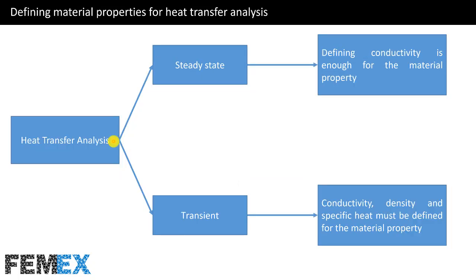Now I want to talk about defining material properties for heat transfer analysis. There are two types of heat transfer analysis in Abaqus: steady-state and transient. For steady-state heat transfer analysis, defining conductivity is enough. For transient heat transfer analysis, conductivity, density, and specific heat must all be defined for the material property.